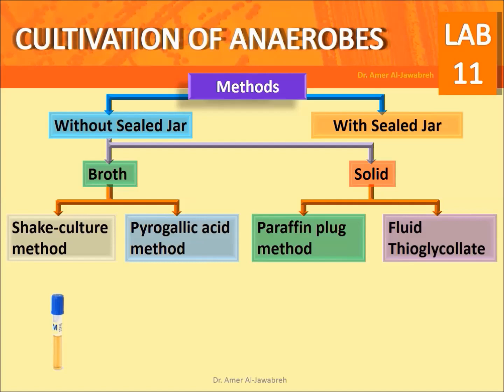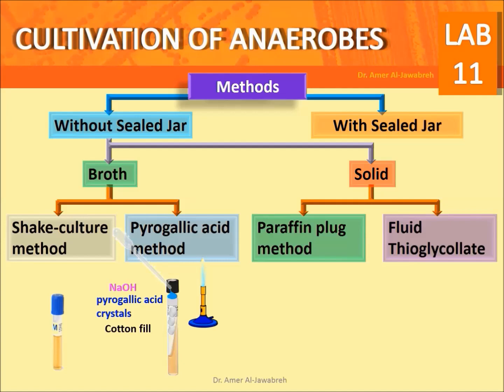Pyrogallic acid method: inoculate nutrient agar slant, push a cotton plug into the tube until nearly touching the slant, fill the space above the cotton with pyrogallic acid crystals, and add sodium hydroxide.